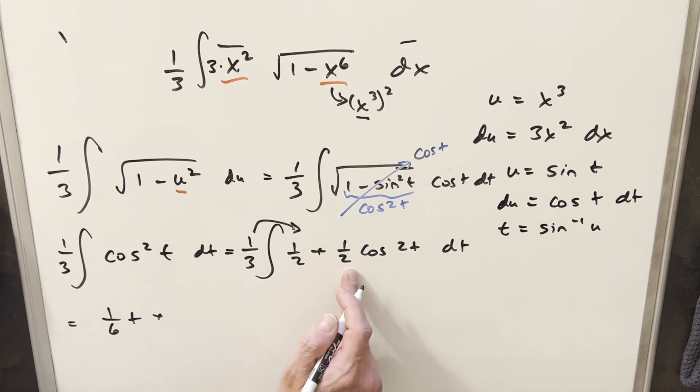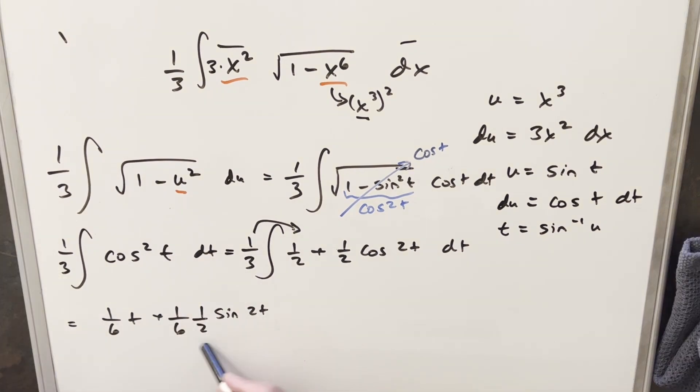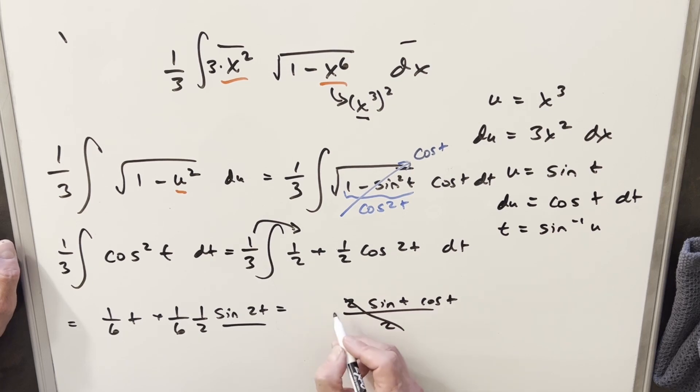And then here, again, this is going to be 1 sixth. But then when we integrate this, we're going to get sine 2t. We'll have our 1 sixth in front, but we have to take a 1 half out front. And I can write this as 1 over 12. But before I do that, I think what I'm going to do is take this sine of 2t, and we're going to write this as 2 sine t cos t, just using the double angle formula here. So then when we have this 1 half, the 2s are going to cancel. We'll have our 1 sixth in front, and we're still going to have this 1 over 6t right here.